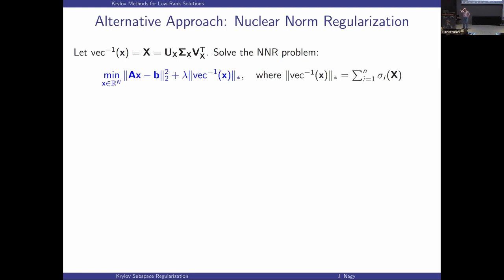On block-Krylov methods: often you don't need many iterations, because the number of iterations depends on the number of good singular values you need to compute your solution. The more ill-posed the problem, the fewer iterations you need — in a way, the more ill-conditioned the problem, the easier it is to solve. You stop really fast because you can only squeeze so much out of the data.